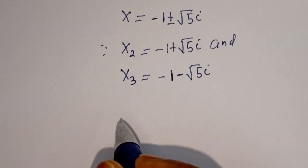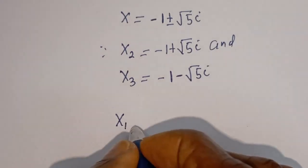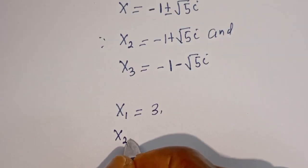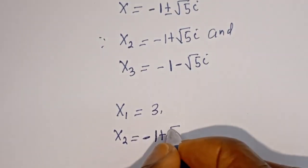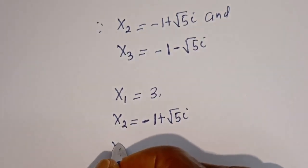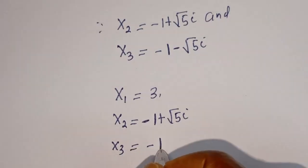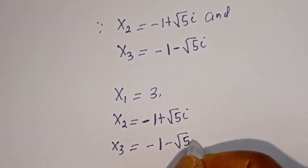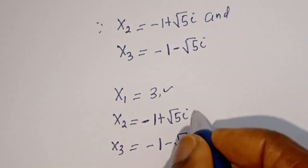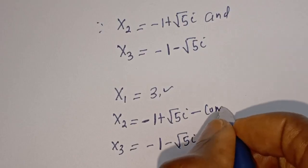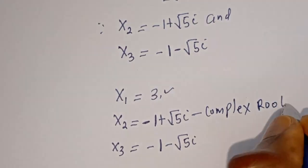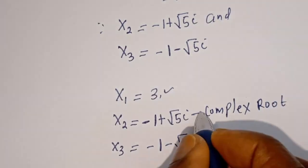Our final answers are: S1 is equal to 3, S2 is equal to minus 1 plus root 5i, and S3 is minus 1 minus root 5i. We can see that here we have one real root and two complex roots.